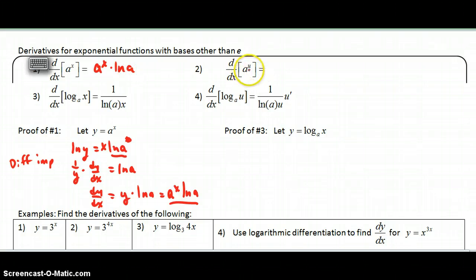And then if I have the derivative with respect to a function that's more involved than just a simple x, this would be a to the u times ln of u, I'm sorry ln of a. And then what else do I have to do? Well I have to chain off the exponents, so this would be times u prime.